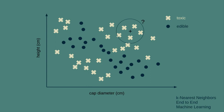If we look at a different location, we can see where the plus sign is there. With that cap diameter and that height, the five closest neighbors are all edible, so that would be predicted to be edible. In this location, the five closest neighbors includes three edible mushrooms and two toxic mushrooms. The edible outweighs the toxic, so that point would be declared edible. You can see by looking at the plot that it definitely falls within the spread of the other edible mushrooms, so that's a very reasonable decision to make. Then if we look at another point that includes four edible mushrooms and one toxic mushroom, it's definitely classified as edible.